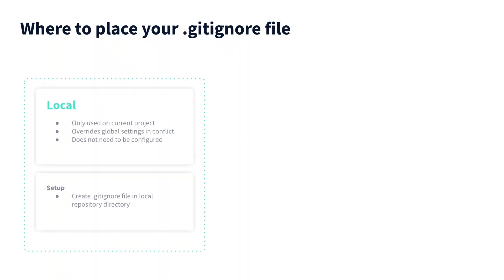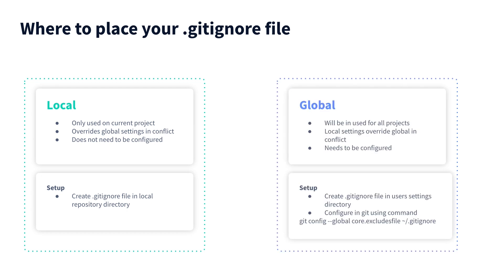Before we get started, it's important to know that there are two types of gitignore files. The first is your local gitignore file, which works on a singular project or repository. The other is your global gitignore file, where you implement rules that affect all of your projects on your machine. Both are important and you should use both. The local one will override the global one and they should both have relatively different information. We'll look at local first and then dive into how to set up a global one at the end, but they all follow the same rules.